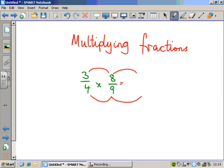So what is 3 times 8? 3 times 8 is 24. And on the bottom, 4 times 9 is 36. And there's our answer, 24 over 36. Isn't that easy?